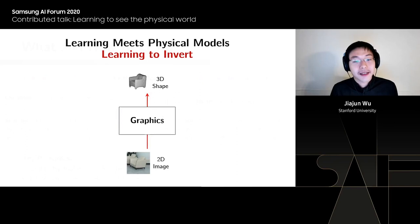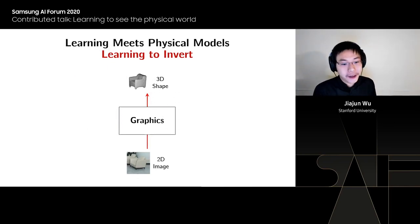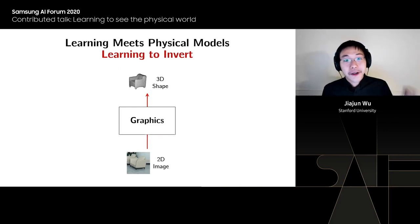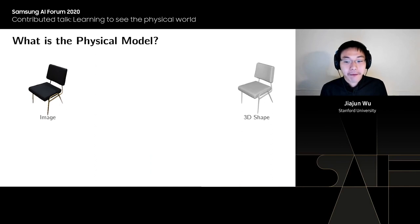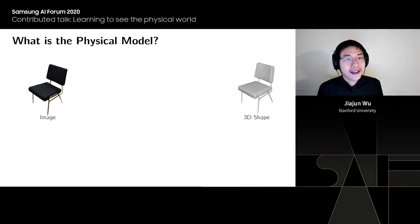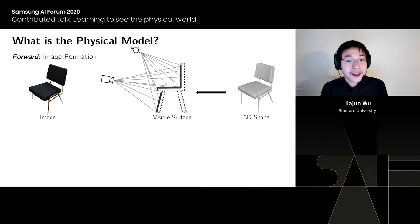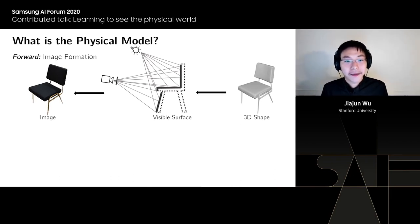Let's look at a concrete example. Given a 2D image with a single object, can we infer its 3D geometry? The physical model here is straightforward: a 3D shape is placed in space, a light source sends rays that hit the visible surface, and those rays reflect into the camera, forming the image plane. So what we're seeing about object geometry is actually the visible surface.